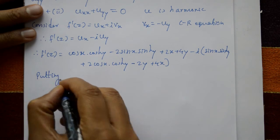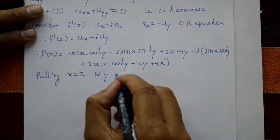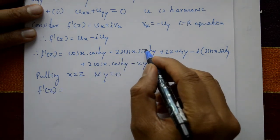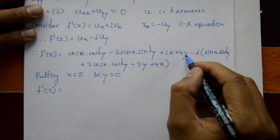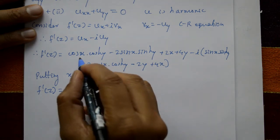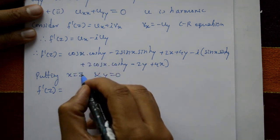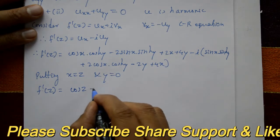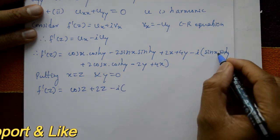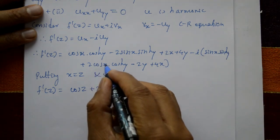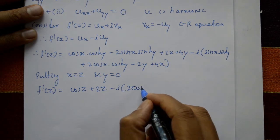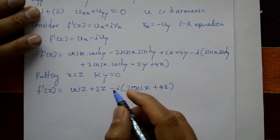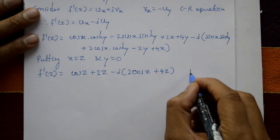Now put x = z and y = 0 in this equation. f'(z): with y = 0, sin(0) = 0, sinh(0) = 0, so those terms vanish. Remaining: cos(z)·cosh(0) = cos(z), and cosh(0) = 1, so plus 2z. Minus i times: sin(0) = 0, and 2cos(z)·cosh(0) = 2cos(z), then plus 4z. Now integrate both sides.